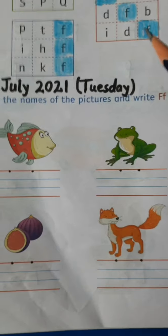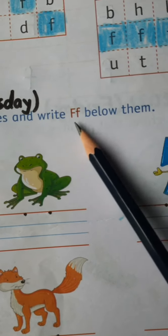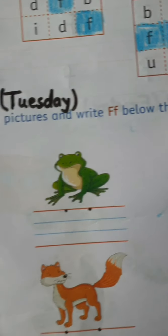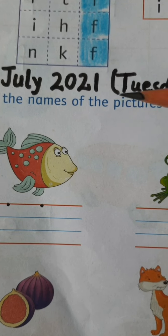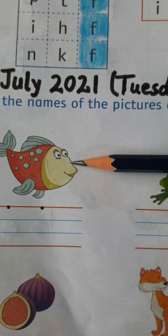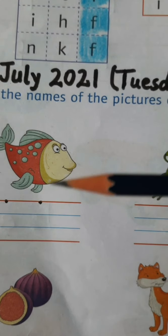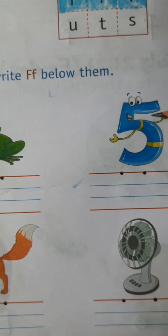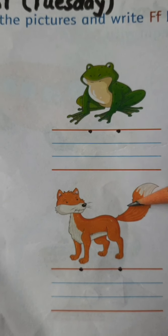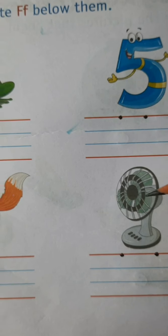So what is your worksheet children? Worksheet is, see the names of the pictures and write capital F and small f below them. So here are some pictures. So first let's recognize the pictures. So what is this picture? This is a fish. This is a frog. Number 5. And this is a fig. And this is a wild animal. So this is a fox. And this is a picture of fan.